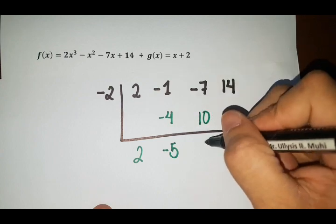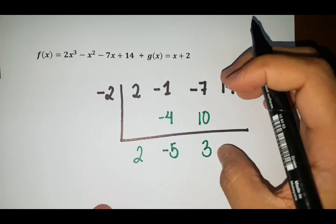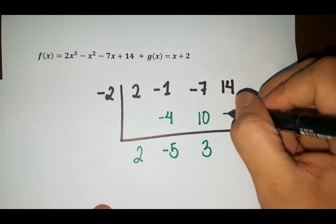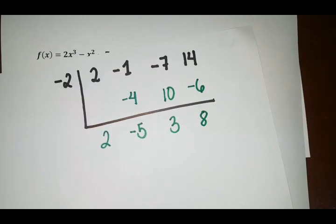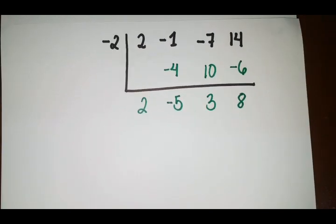So negative 7 plus 10, that's 3. 3 times negative 2, that is negative 6. So we have a remainder here, which is 8. So let's write it as polynomial.